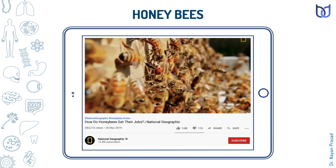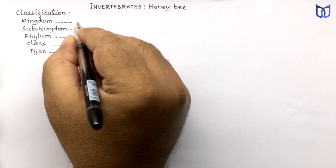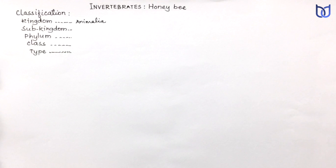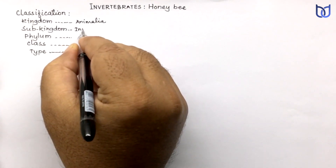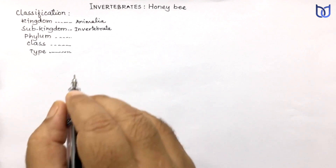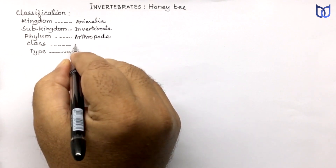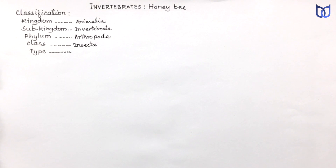Let us see the classification of honeybees. Honeybees belong to the kingdom Animalia. They are without an endoskeleton or backbone. Honeybees belong to the phylum Arthropoda, class Insecta. Remember, insects have a distinct divided body — the divisions include head, thorax, and abdomen — and they have three pairs of jointed legs. So, honeybees are kept in class Insecta.